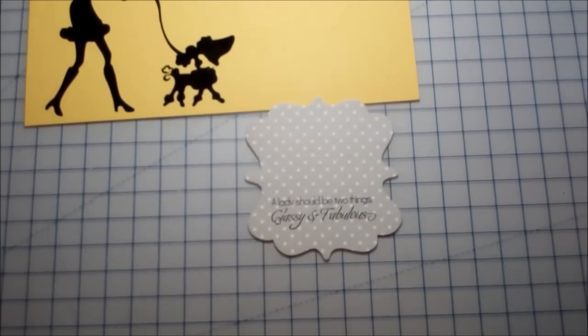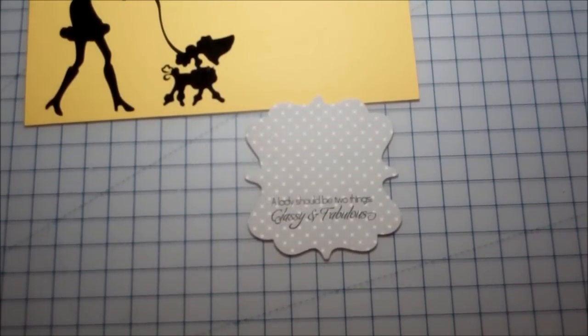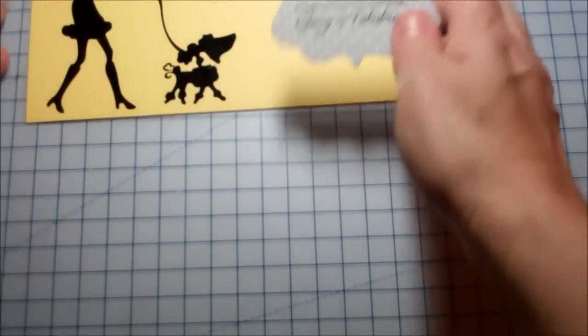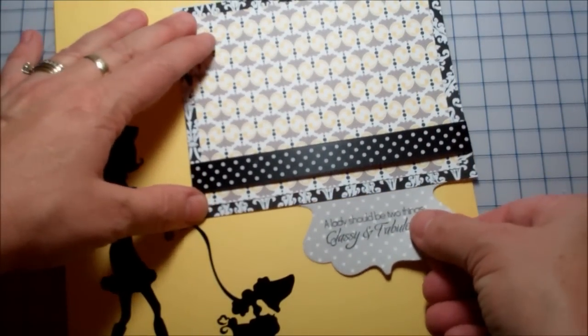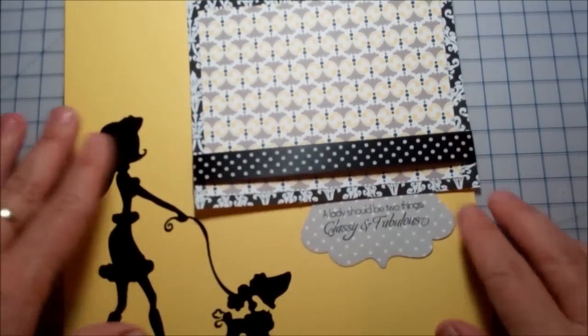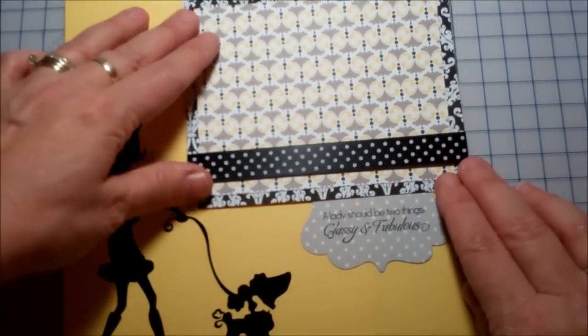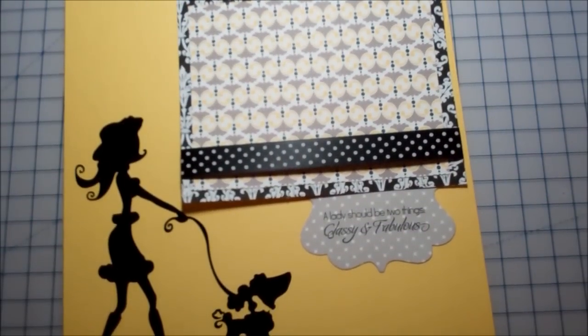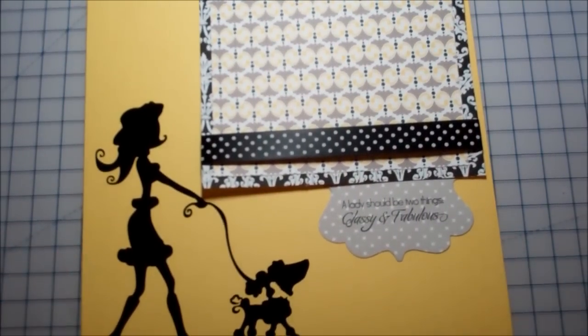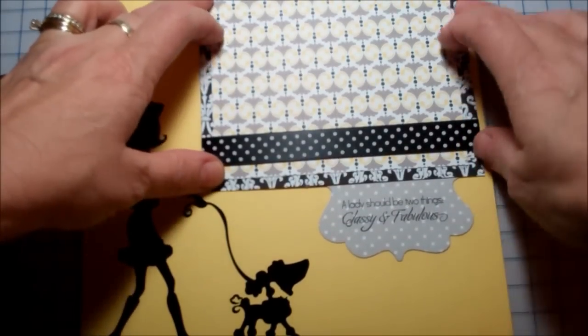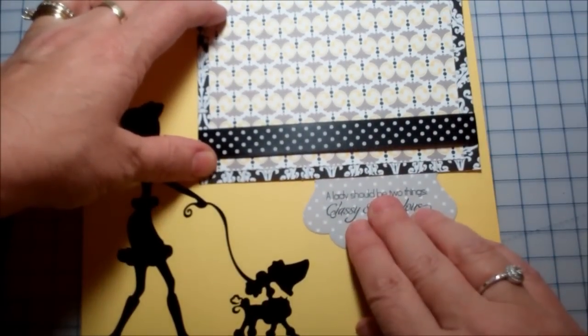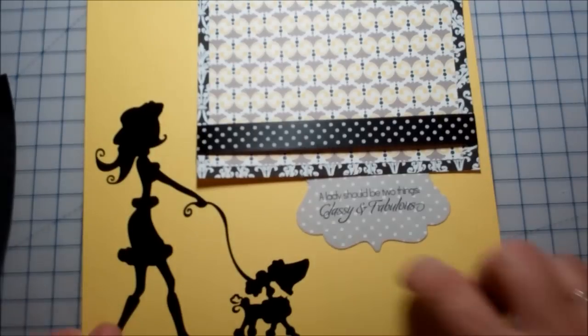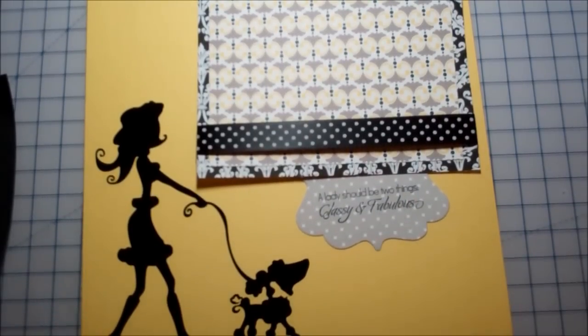So I'm going to go ahead and cut that in half. Let's see how that looks so far. Oh, that's so cute so far. But it's still missing a few things. So let's see. Maybe a little stitching around this. But I can take care of that.